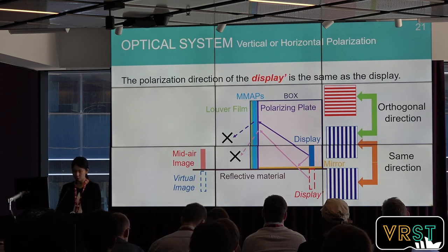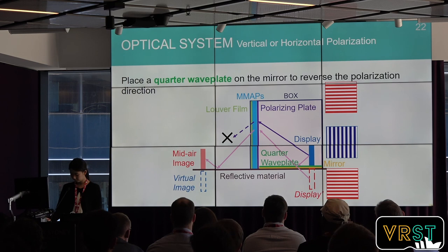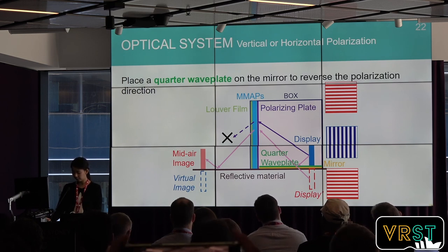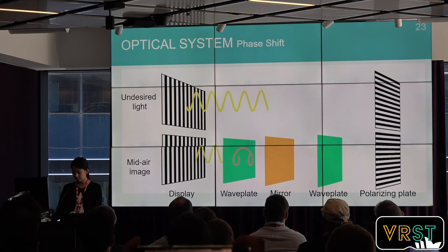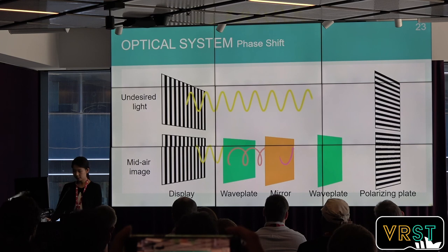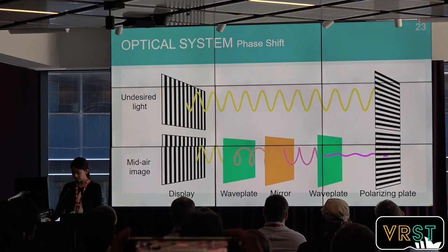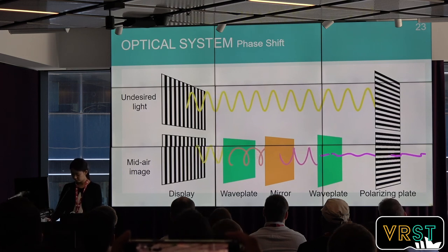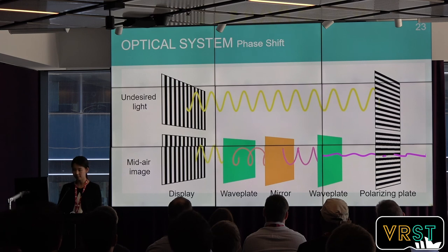In the case of a display with vertical or horizontal polarization like IPS or VA mode, the polarization direction of the reflected display is the same as the display, which would also erase the mid-air image. Therefore, we place a quarter-wave plate on the mirror to reverse the polarization direction. When light from the display passes through the wave plate, linearly polarized light changes to circularly polarized light. When reflected by the mirror, the direction of rotation is reversed. When it passes through the wave plate again, the circularly polarized light changes to linearly polarized light orthogonal to the original polarization direction, making it possible to erase the undesired light image.